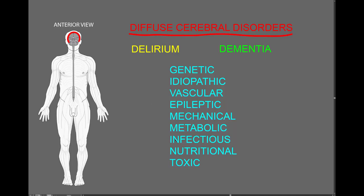Certain infectious microorganisms may invade the brain tissue causing diffuse cerebral inflammation, which is called encephalitis, or they may invade the cerebrospinal fluid and inflame the meninges around the brain, which is called meningitis. The nutritional disorder vitamin B12 deficiency may cause dementia, and many toxins may affect the brain diffusely, such as sedating medications that commonly cause delirium. Most types of mental illness or psychiatric disorders are probably from idiopathic diffuse cerebral dysfunction as well.